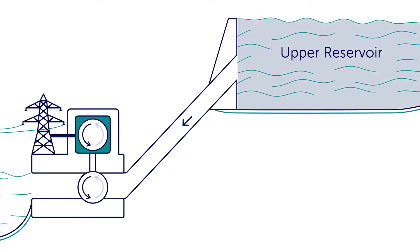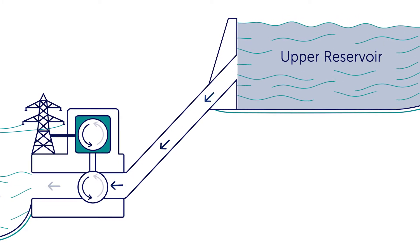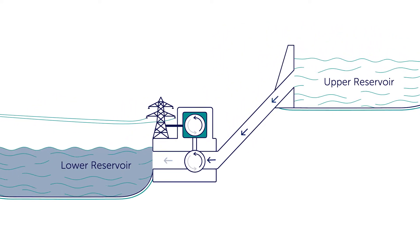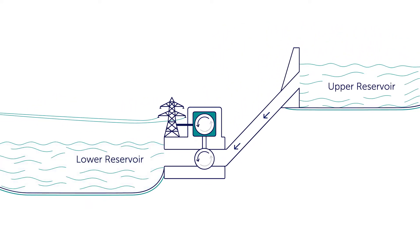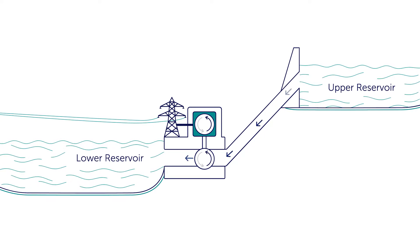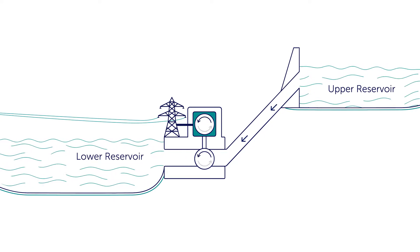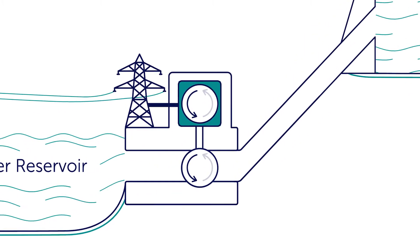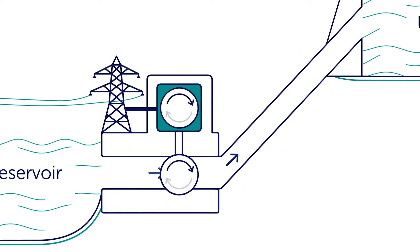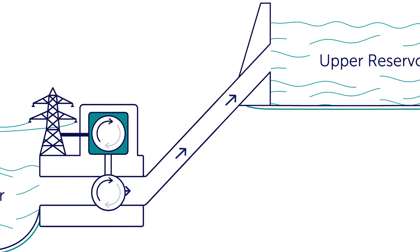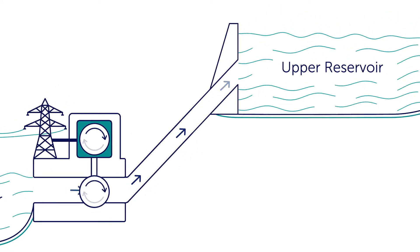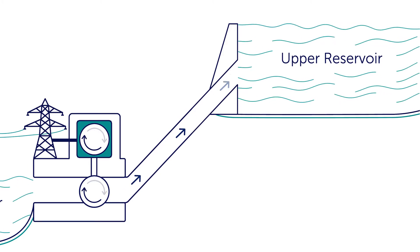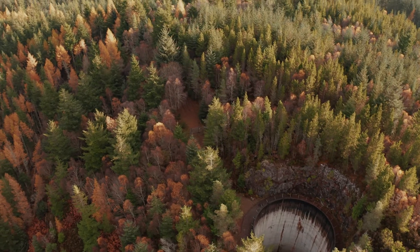Pump storage works when water is released from the higher reservoir to drive the turbines in the power station below it, before being passed into the lower reservoir. Then at times when there is cheap surplus electricity available, for example from wind farms or solar, the electricity generators are switched to become massive motors which pump water from the lower reservoir back up to the higher one.